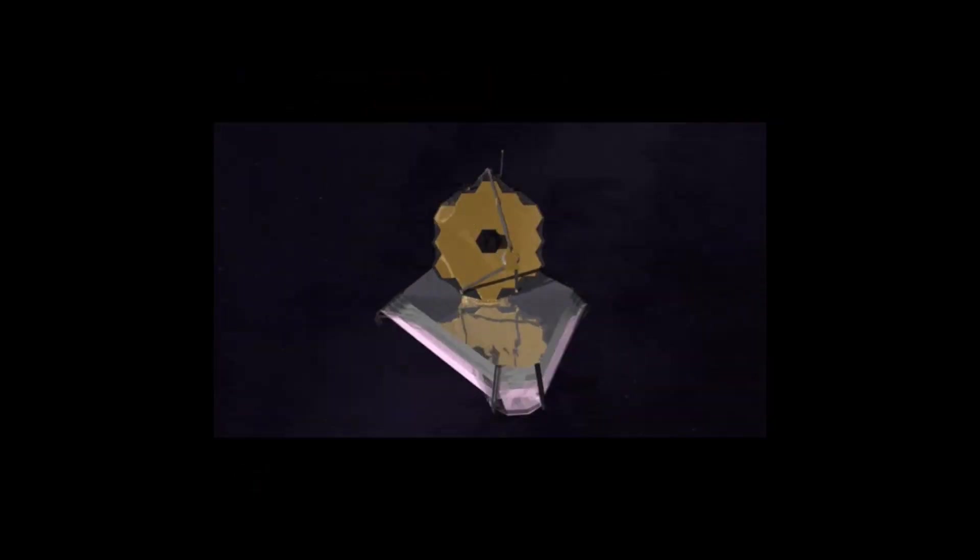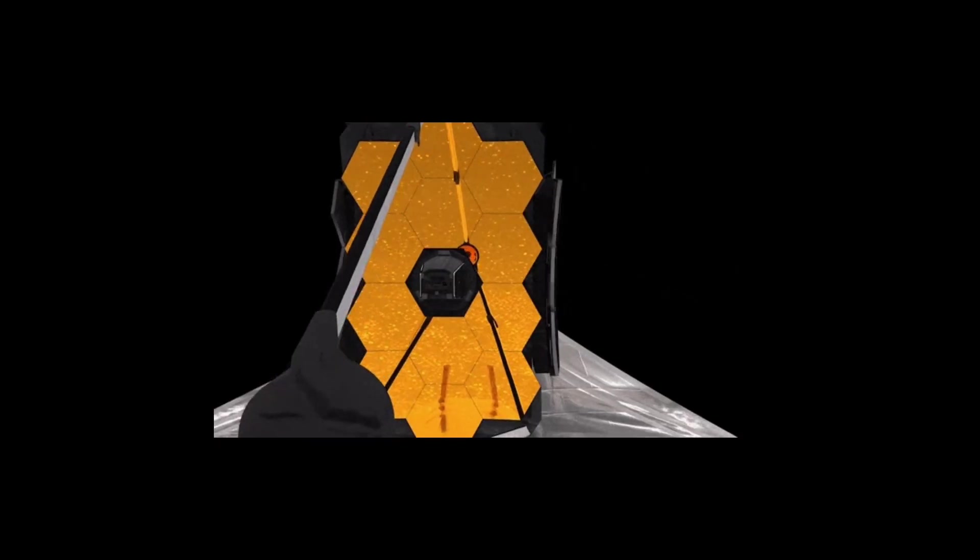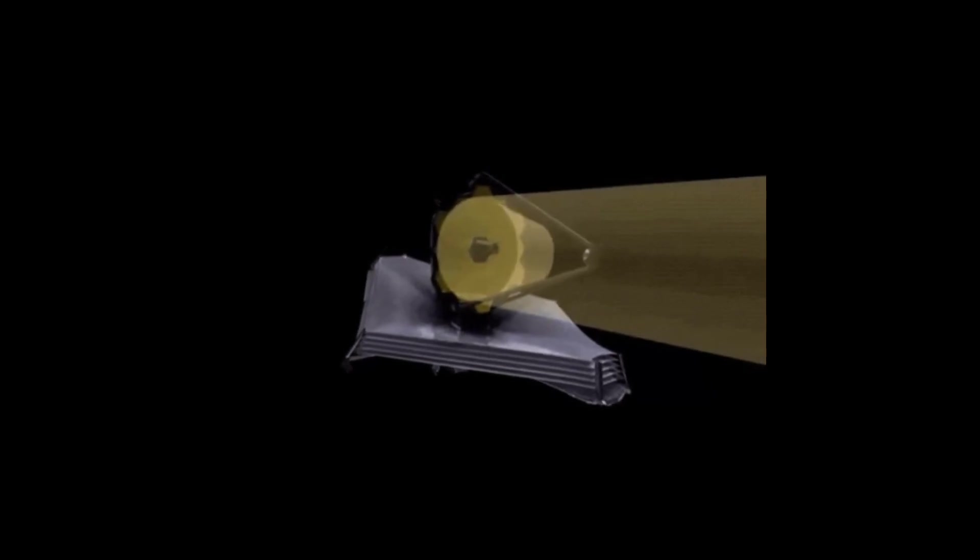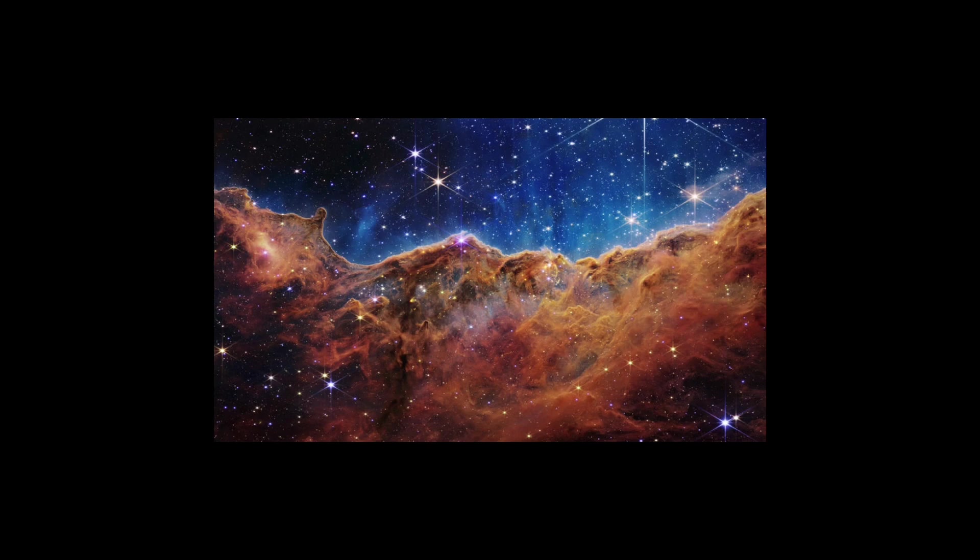The James Webb Space Telescope is a space telescope which specializes in infrared astronomy. Its high-resolution and high-sensitivity instruments allow it to capture objects too old, distant, or faint for the Hubble telescope. Supernovas can outshine their galaxy for a brief moment to a few days or months. Although uncommon in our galaxy, scientists observe a few hundred per year outside our galaxy.